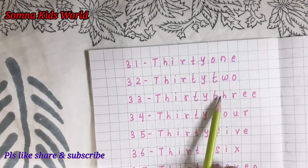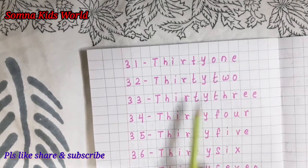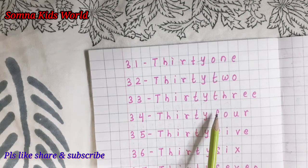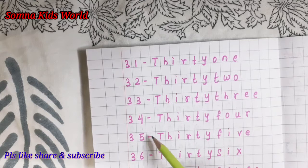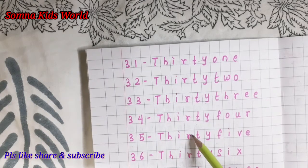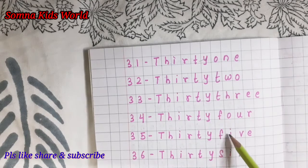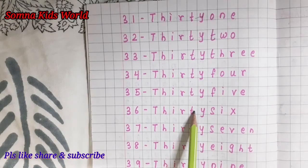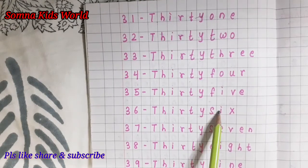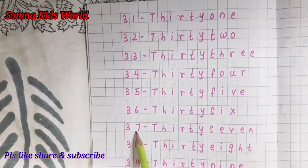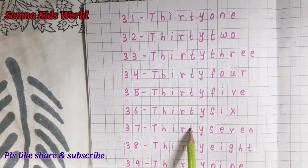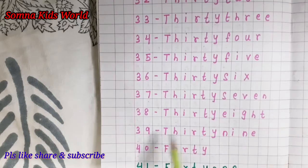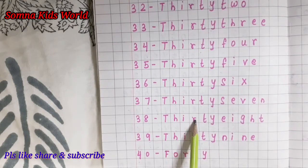31 — THIRTY ONE. 32 — THIRTY TWO. 33 — THIRTY THREE. 34 — THIRTY FOUR. 35 — THIRTY FIVE. 36 — THIRTY SIX. 37 — THIRTY SEVEN. 38 — THIRTY EIGHT.